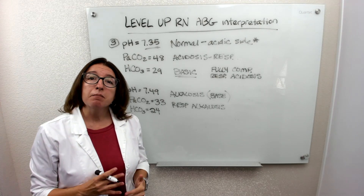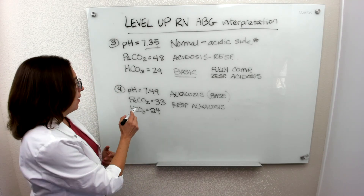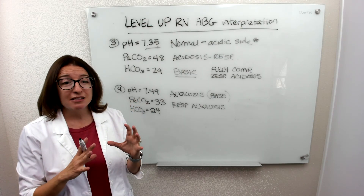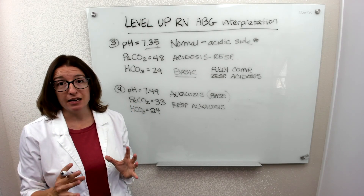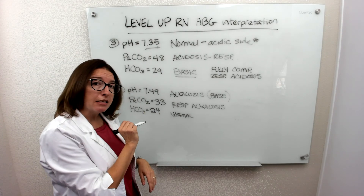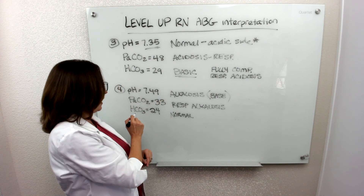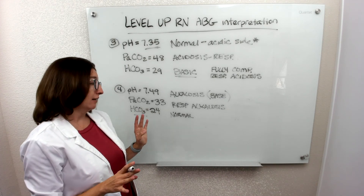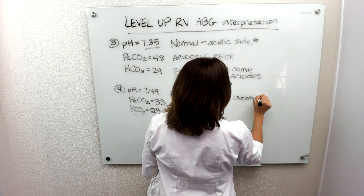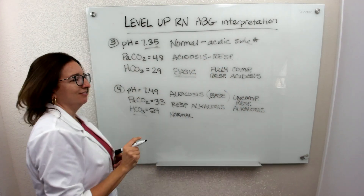Now we check if the metabolic system is trying to compensate. If it were compensating, we'd see it become acidic. HCO3 should be between 22 and 26; our value is 24, which is within normal range — it's not acidic and not trying to compensate. So for this problem, we have uncompensated respiratory alkalosis. The respiratory system is causing the alkalosis and the metabolic system is not saving the day; they're not even trying, because we have a normal HCO3 level.